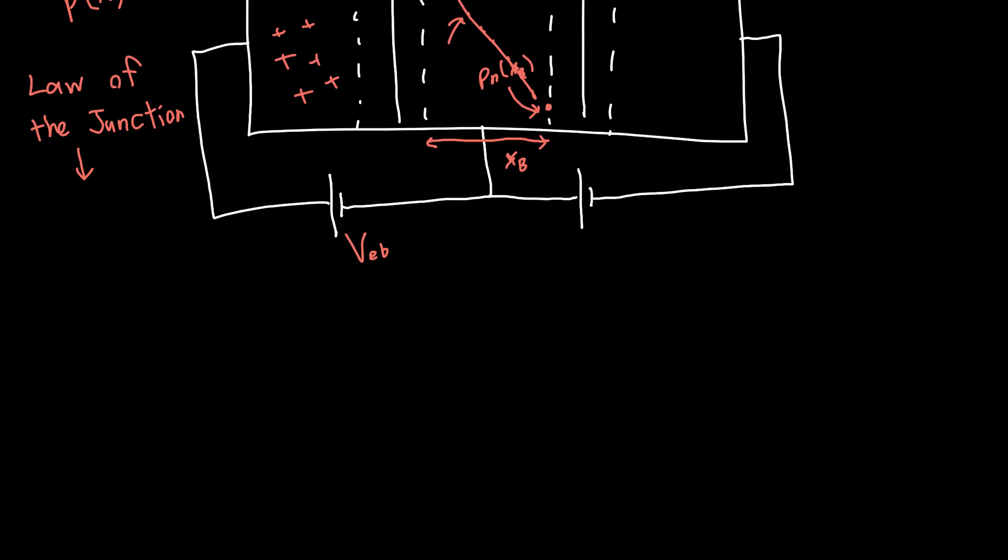And so what's it going to look like? Because if we can answer that question, then we can figure out what the hole current is at all points. And this allows us to figure out how many holes get across. And once we know this, we know most of what we need to calculate the coefficient alpha, which tells us how good of a BJT this device is.